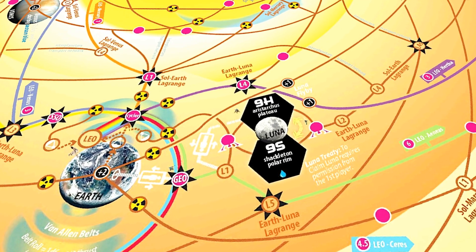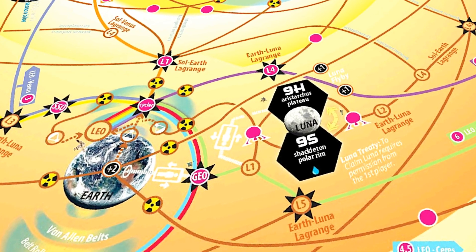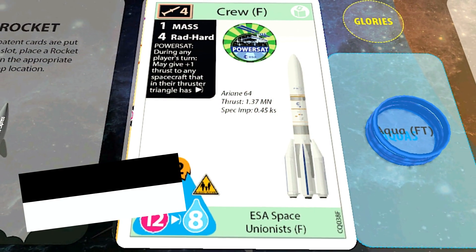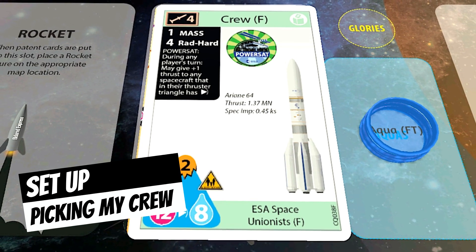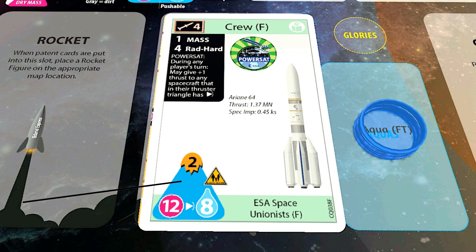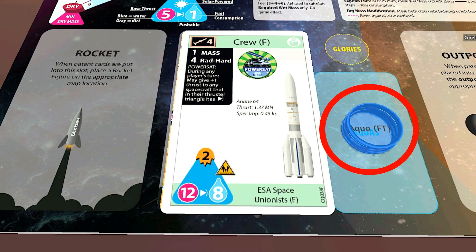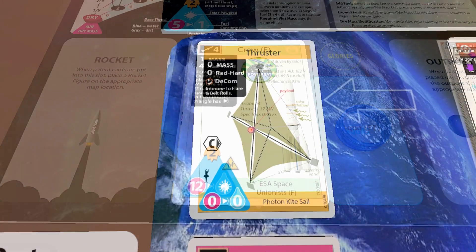For my crew I'm going to take the ESA again because I love their power sat ability. And because there's six patent decks, we will start with six aquas.